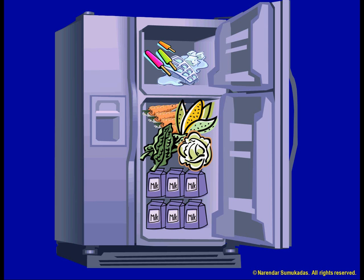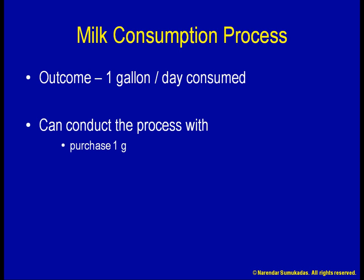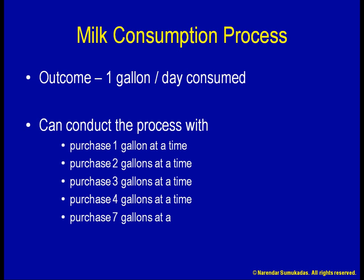As you can see from this example, I can conduct the process of feeding my family milk using different amounts of inventory. The process outcome will still be the same — my family will get one gallon of milk every day. I can conduct that process by purchasing one gallon at a time, or two, or three, or four gallons at a time, and so on.